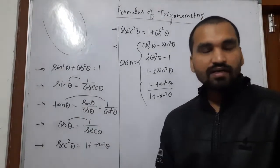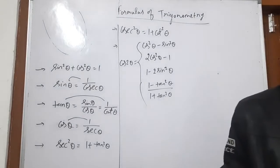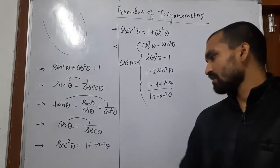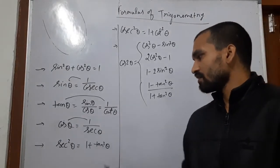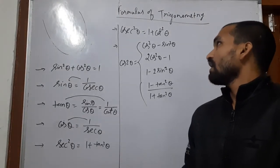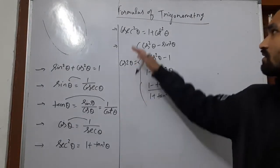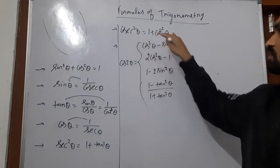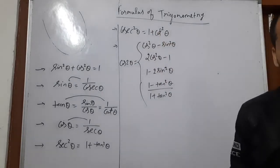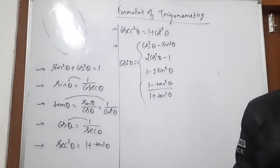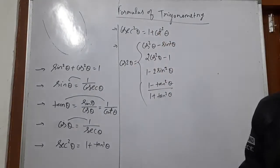Next: sec square theta is equal to 1 plus tan square theta, and another one is cosec square theta equal to 1 plus cot square theta.